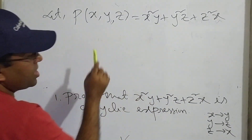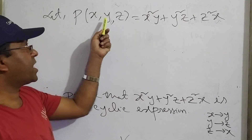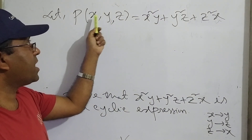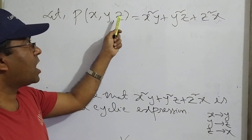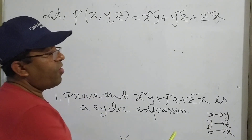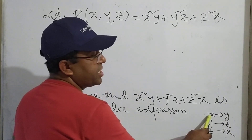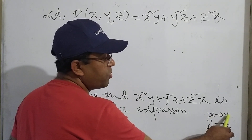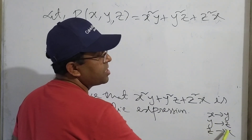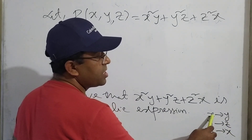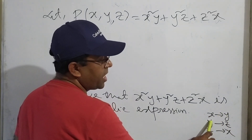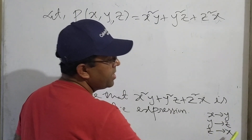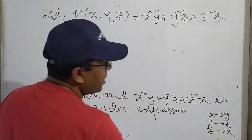Here, the first variable is x, the second variable is y, and the third variable is z. Now, the first variable x is replaced by y, y is replaced by z, and z is replaced by x. That means first variable is replaced by second, second variable is replaced by third, and third variable is replaced by the first variable.